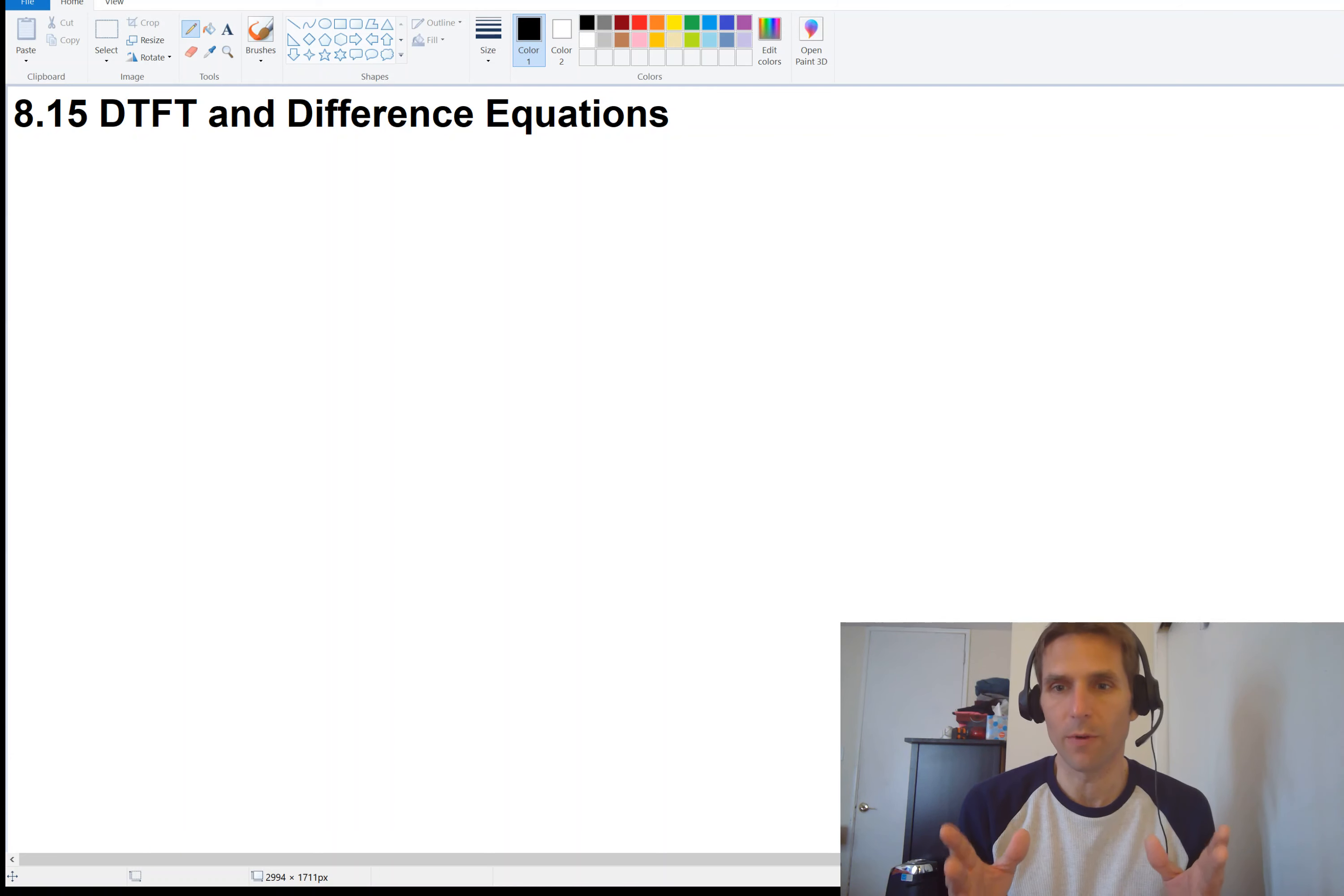Difference equations. From those difference equations that relate delayed versions of x with delayed versions of y, we were able to come up with the impulse response. This was back in the first half of the semester when we were talking about time, the time domain, so impulse response. Now we're going to look at how we can extract the frequency response of a discrete time system from the difference equation. So let's take a look at that.